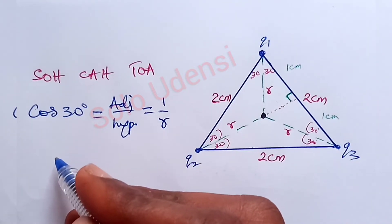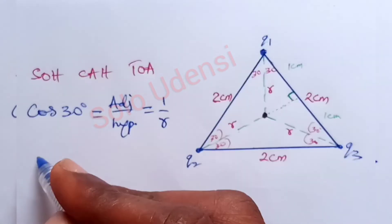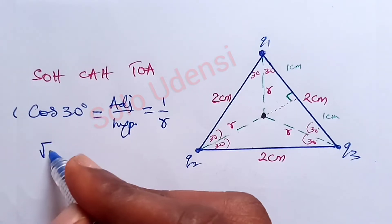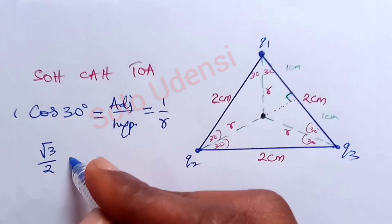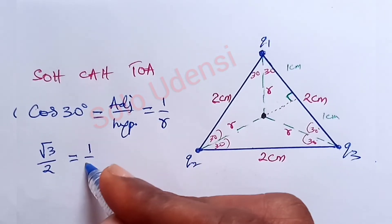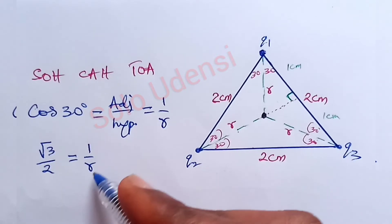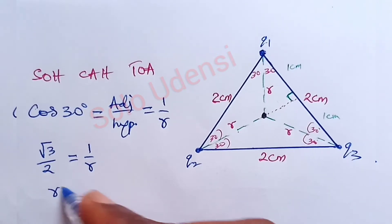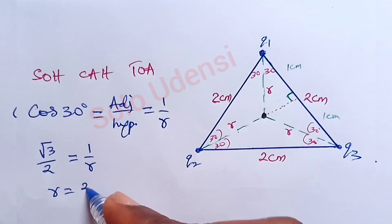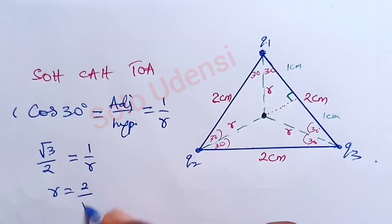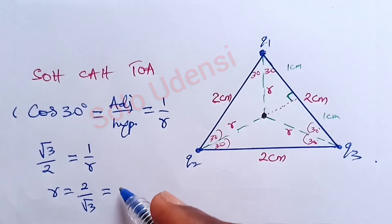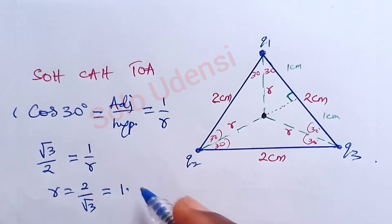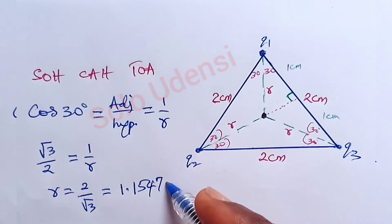Since cos 30 degrees equals root 3 over 2, we have root 3 over 2 equals 1 over R. Therefore R equals 2 over root 3, which is approximately 1.1547 cm.